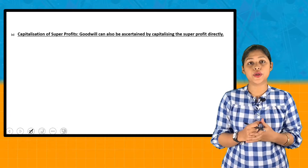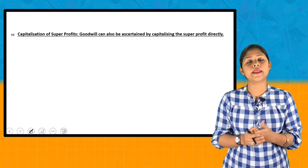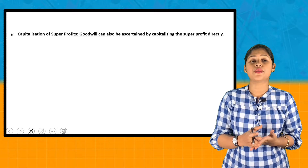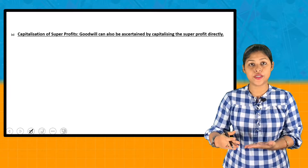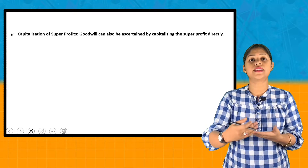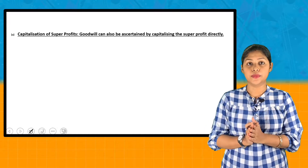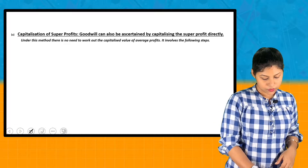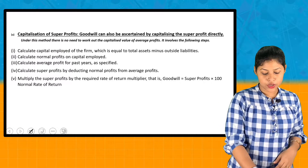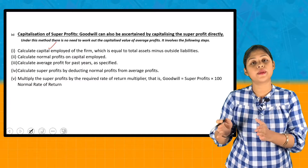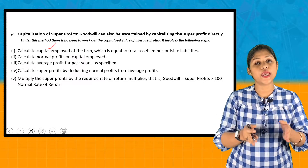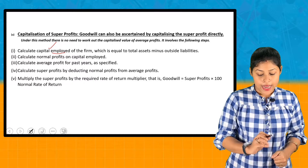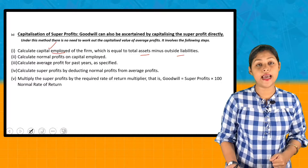When we calculate the Capitalization of Super Profit Method, the steps are: First, calculate the capital employed, which is total assets minus outside liabilities. Second, calculate the normal profit by multiplying capital employed by the normal rate of return. Third, calculate the average profits. Fourth, calculate the super profit by deducting normal profits from average profits.